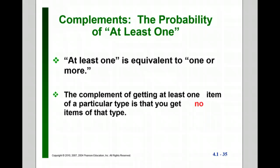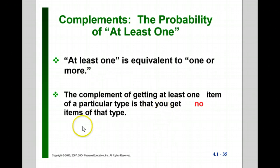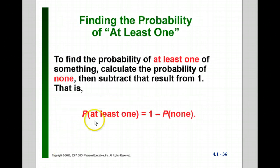At least one is equivalent to one or more. The complement of at least one is none. So for at least one, the rule we're going to use is one minus the probability of none.